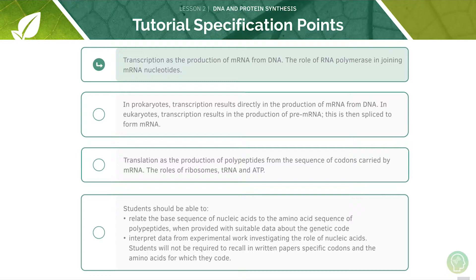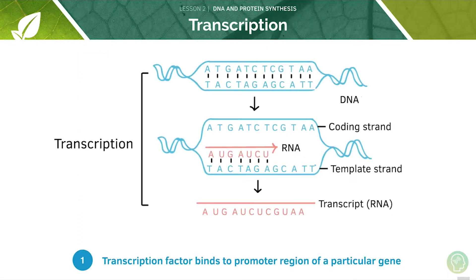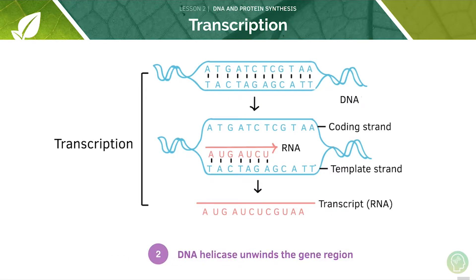We'll now look more closely at the role of RNA polymerase. The first stage is that the transcription factor will bind to the promoter region of a particular gene. RNA polymerase adds complementary RNA nucleotides to a template DNA strand. The formed RNA strand is identical to the other coding DNA strand, except that U is substituted for T. Nucleotides are only added to the 3' end of the RNA molecule. Next, DNA helicase unwinds the gene region by breaking the hydrogen bonds between the two DNA strands, which exposes the bases on each strand.